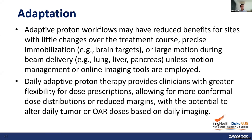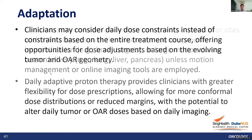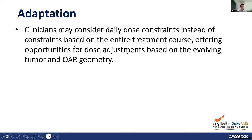Daily adaptive proton therapy allows alteration of daily tumor or OAR doses based on daily imaging. Clinicians may consider daily dose constraints instead of constraints based on the entire treatment course, offering opportunities for dose adjustments based on evolving tumor and OAR geometry. Now regarding imaging: CT is utilized for plan adaptation through either a plan-of-the-day approach or standard planning at proton and ion therapy centers.